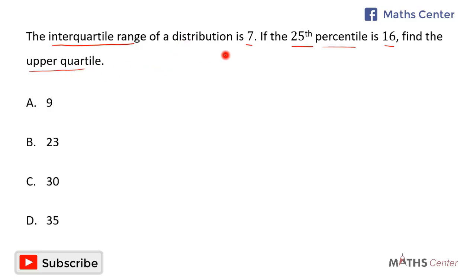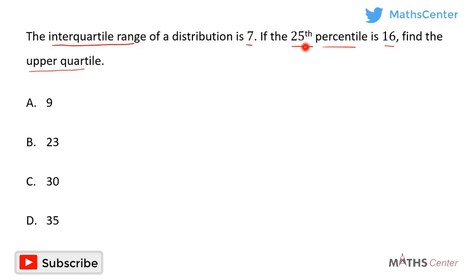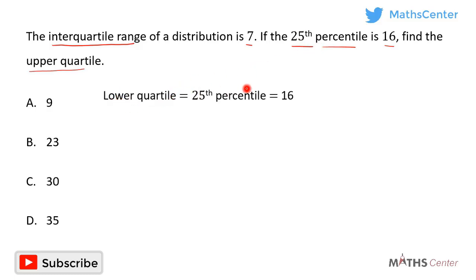In a distribution, the 25th percentile is the same as the lower quartile. The question tells us that the 25th percentile is 16, so we can also say that the lower quartile is 16, because the lower quartile equals the 25th percentile.